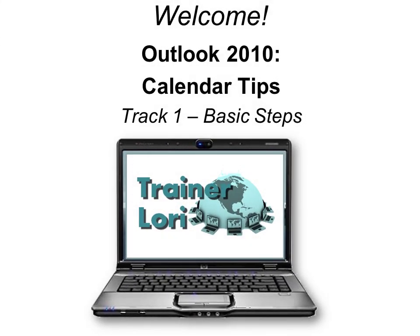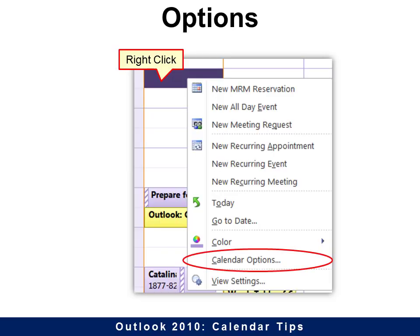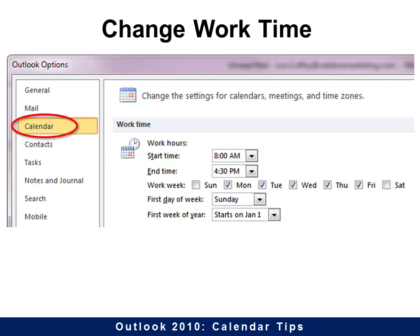Welcome to Outlook 2010 Calendar Tips. I'm Trainer Laurie. Calendar Tips will show you how to personalize and speed up your calendar elements. You can find it in two ways: you can either right-click and choose Calendar Options, or you'll find it under the File tab. Remember to choose the Calendar tab to find all these settings.